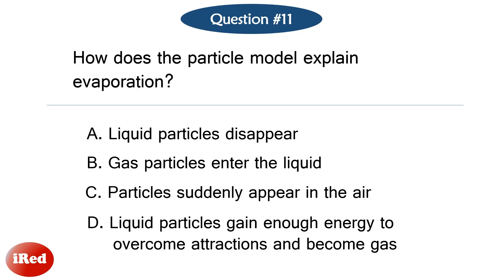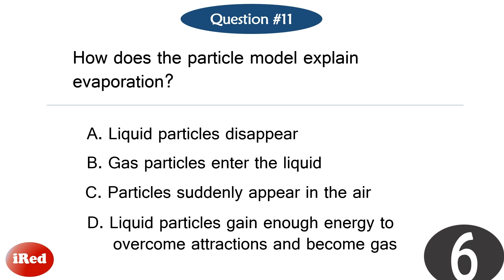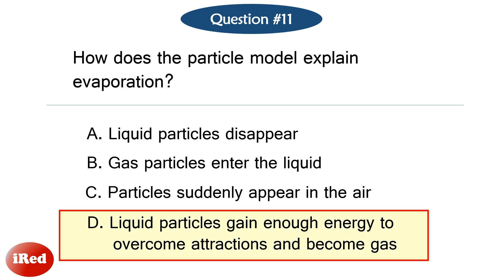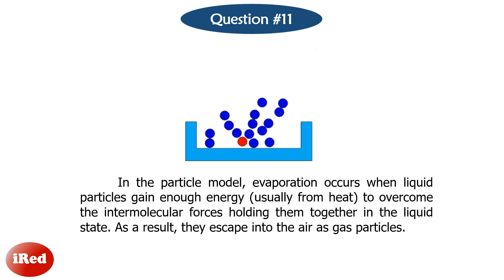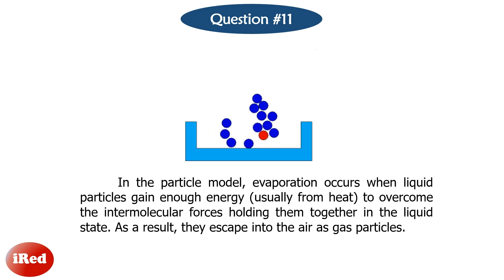Question number eleven. How does the particle model explain evaporation? The correct answer is letter D: liquid particles gain enough energy to overcome attractions and become gas. In the particle model, evaporation occurs when liquid particles gain enough energy, usually from heat, to overcome the intermolecular forces holding them together in the liquid state. As a result, they escape into the air as gas particles.